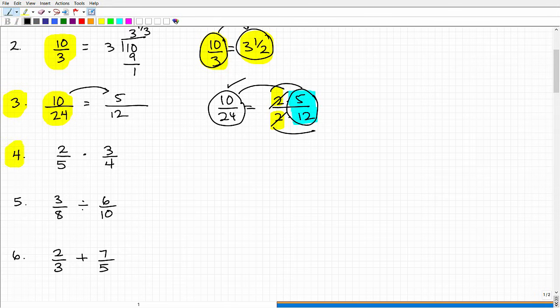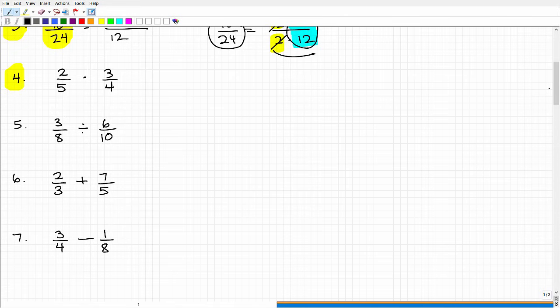Now we have 2 fractions here. Doesn't make a difference if they're improper or proper. The idea is we want to multiply them. So I have 1 fraction and I want to multiply it by another fraction. This is very easy. All you need to do is simply multiply the respective numerators and denominators. So 2 times 3 is 6, 5 times 4 is 20. This is a valid, correct answer, however, you always want to simplify your answers, reduce it.